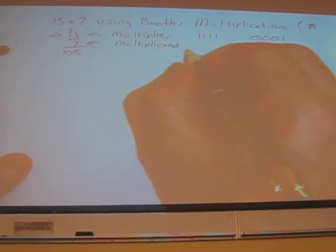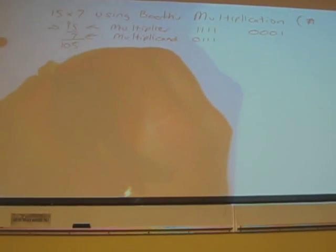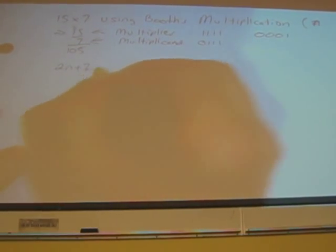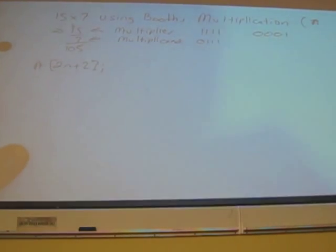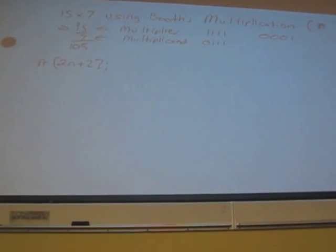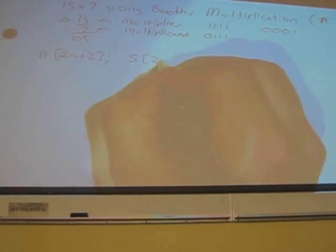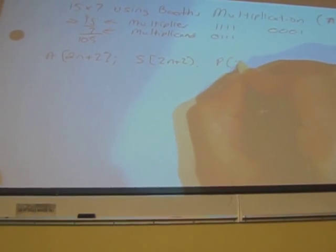Let me set up the multiplier. And then the multiplicand is 0, 1, 1, and 1. We have our three arrays. Each of these arrays are of length 2n plus 2. What does A stand for? Additions. Correct. What does S stand for? Subtraction. And what is P? That's the product.